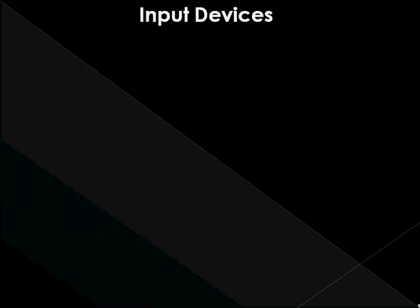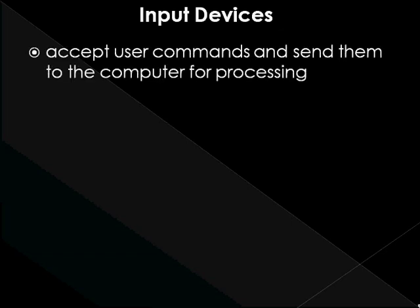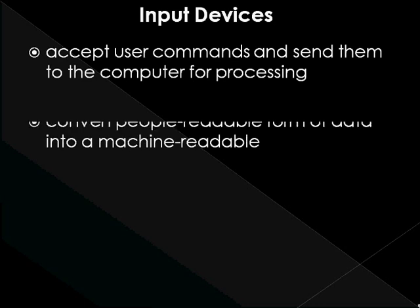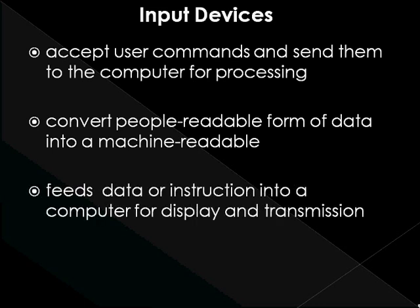Input Devices accept user commands or data and send them to the computer for processing. The main function of input devices is to convert people-readable forms of data into a machine-readable form that the computer can store and process. People-readable data can be letters, numbers, visual codes, and symbols, whereas machine-readable forms consist of electronic signals of zeros and ones.